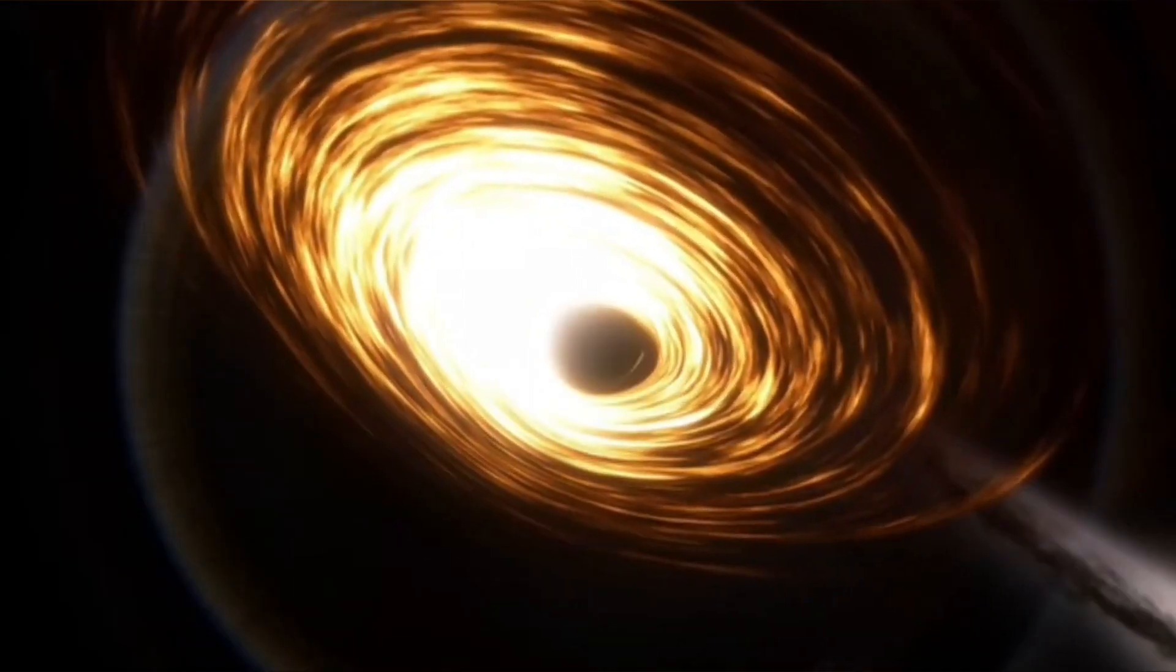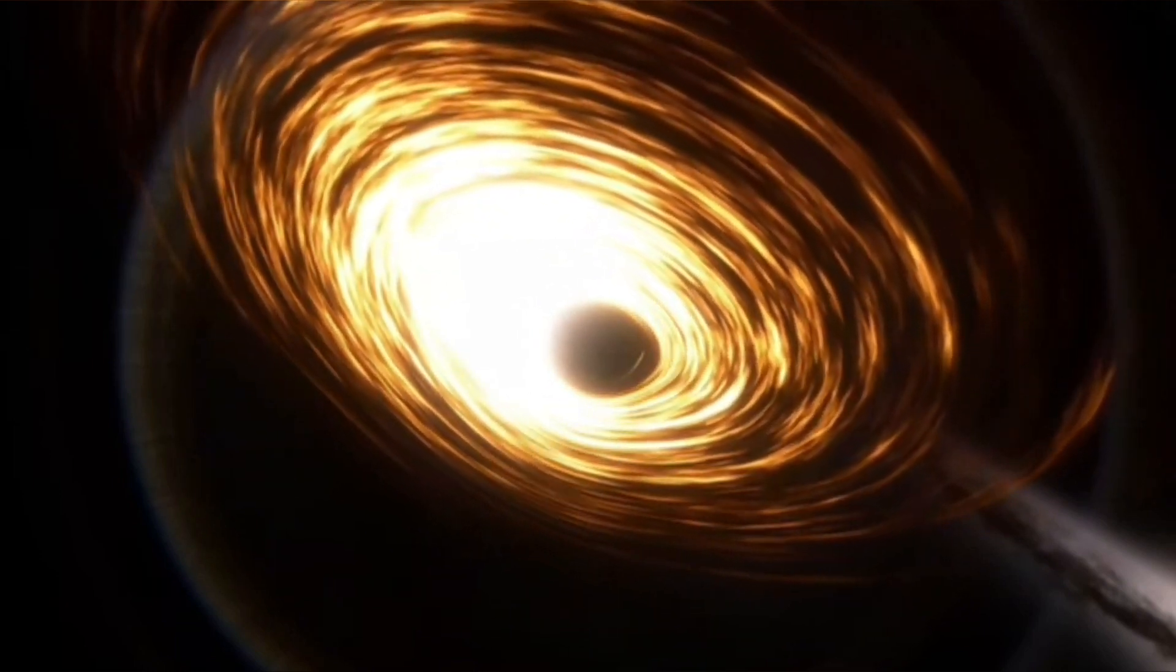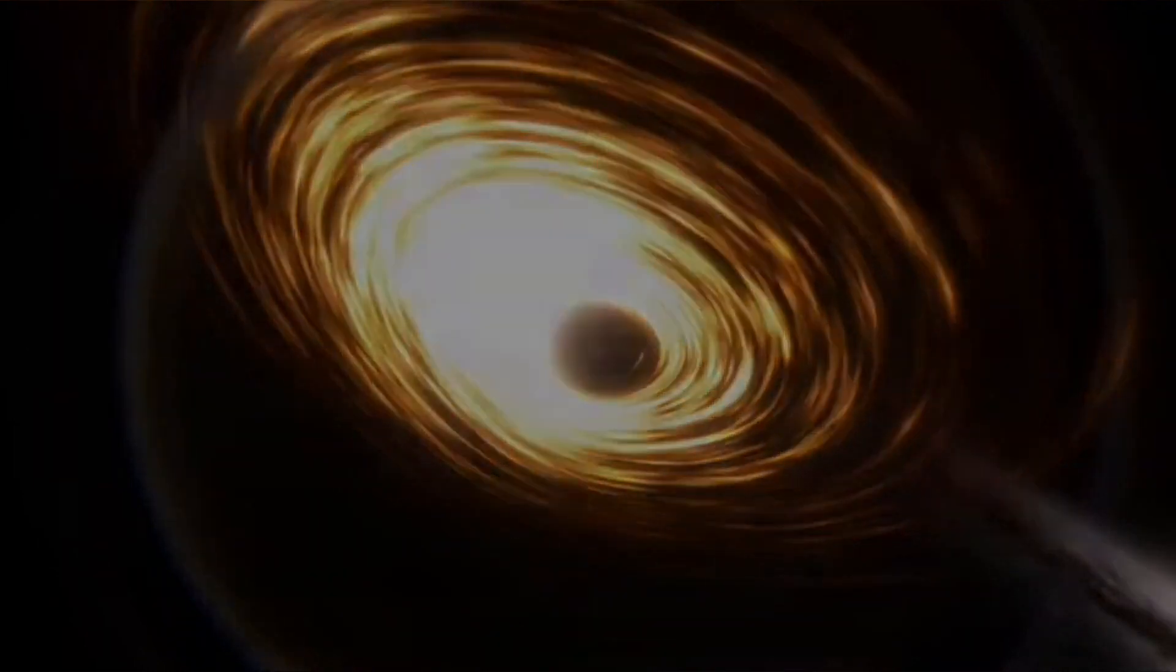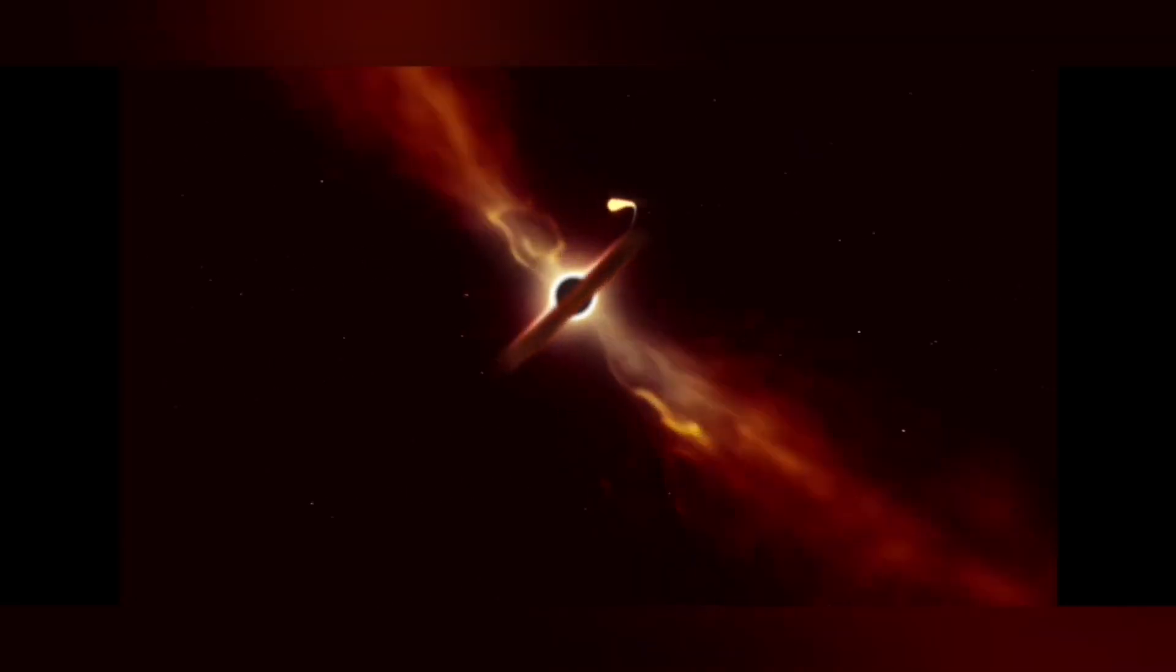Black holes are aptly named because they usually don't reflect or emit light. They are only visible when they are feeding on stars or gas clouds that stray too close to their boundary, called the event horizon.